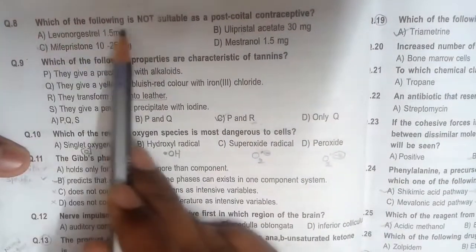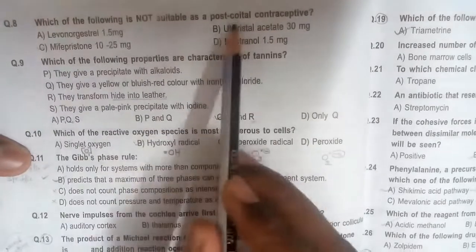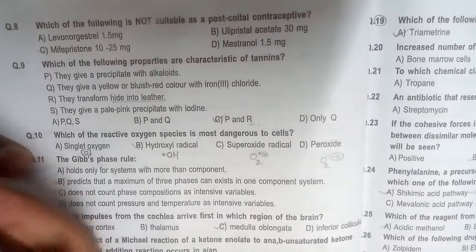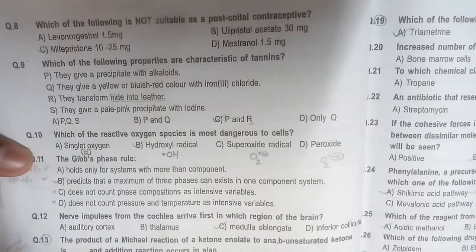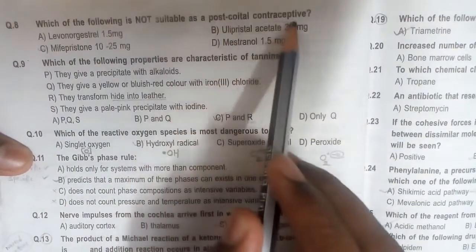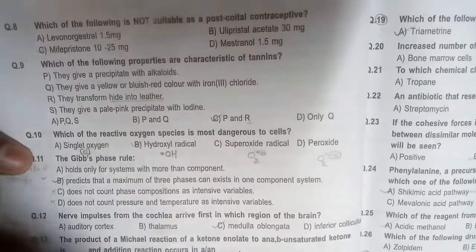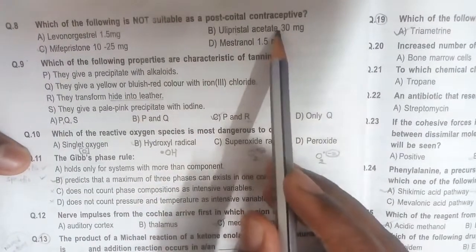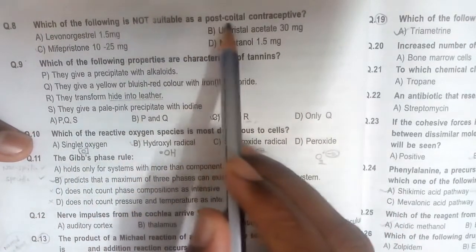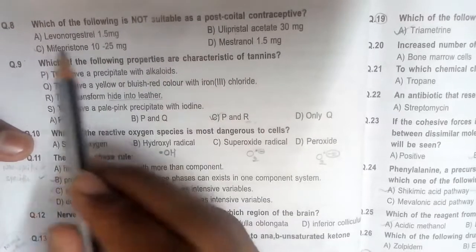Which of the following is not suitable as a post-coital contraceptive? Generally during rape cases or contraceptive failure cases or when condom is ruptured during coitus, these post-coital contraceptive methods are preferred. This is also called emergency contraceptives. Which is not suitable? The answer is C, mifepristone. The remaining three are used for emergency or post-coital contraceptives.